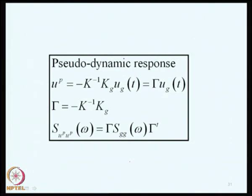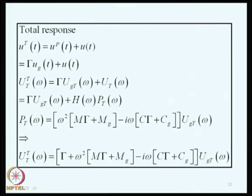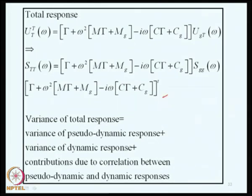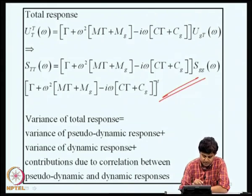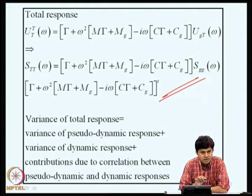The pseudo-dynamic response can be determined using the influence matrix, and its PSD is found in terms of the influence matrix and the displacement PSD. The total response consists of pseudo-dynamic and dynamic components, and the PSD of the total response is derived by manipulating these expressions. The variance of the response is found by integrating over frequency and has three contributions: variance due to the pseudo-dynamic component, variance due to the dynamic component, and contributions due to correlation between the pseudo-dynamic and dynamic responses.